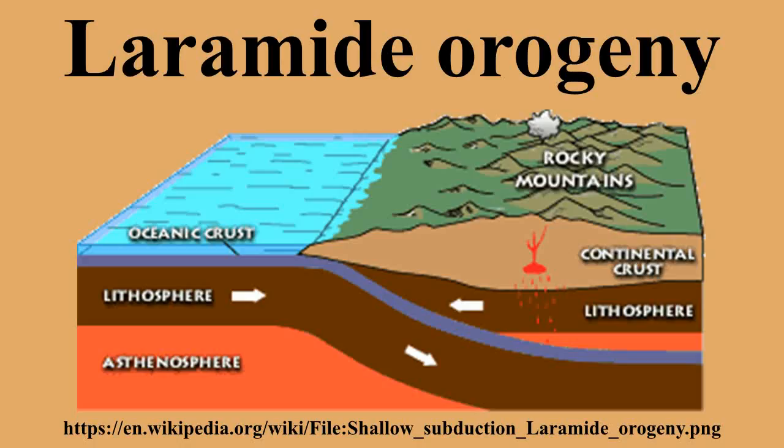One cause for shallow subduction may have been an increased rate of plate convergence. Another proposed cause was subduction of thickened oceanic crust. Magmatism associated with subduction occurred not near the plate edges, but far to the east, called the Coast Range Arc. Geologists call such a lack of volcanic activity near a subduction zone a magmatic null.